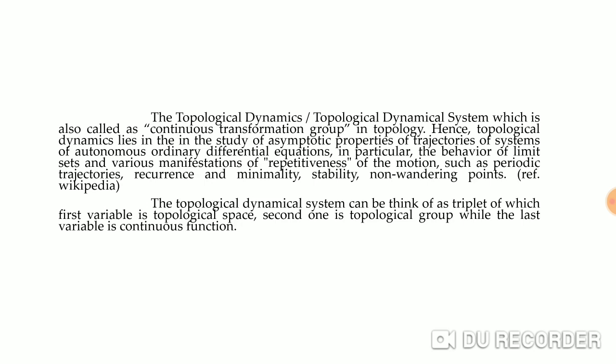A topological dynamical system can be thought of as a triplet. As already stated, it is a combination of algebra, topology, and dynamics, in which the first variable is a topological space, the second is a topological group on which one can study algebraic topology, and the last variable is a continuous function.